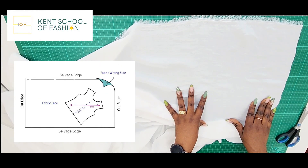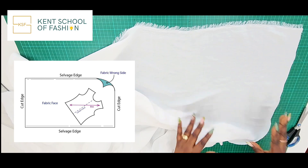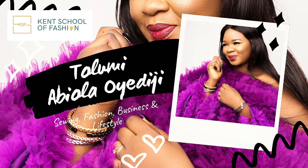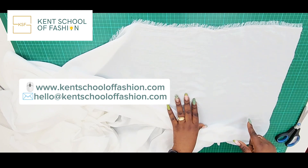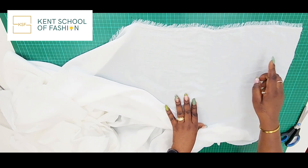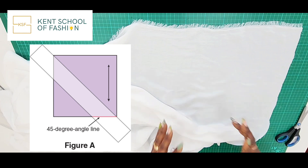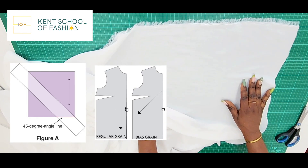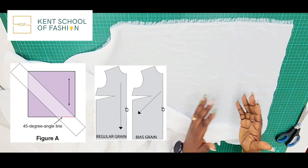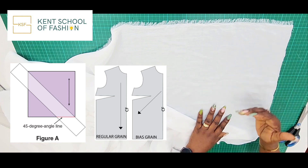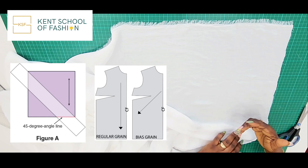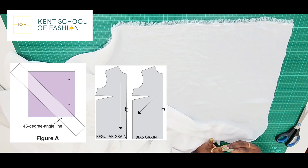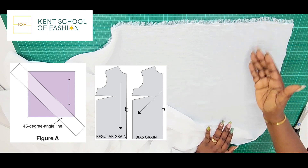Today we are exploring how to cut on a bias and what exactly it means to cut on a bias. Cutting on a bias basically means cutting your fabric not the regular way. When you have a fabric, it is usually woven and you have the warp and the weft, which describes the horizontal and vertical lines and weaves on your fabric. Your grain line will normally run like this — that is what we call the grain line.